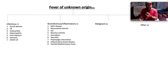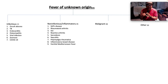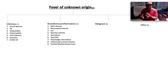Inflammatory causes of fever include Still's disease — tip-off is a very high ferritin — rheumatoid arthritis with symmetrical polyarthritis affecting small joints of the hands, systemic lupus erythematosus, reactive arthritis, sarcoidosis, vasculitis, polymyalgia rheumatica, inflammatory bowel disease with ulcerative colitis and Crohn's disease, and familial Mediterranean fever.